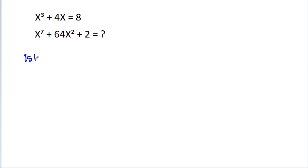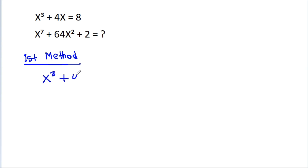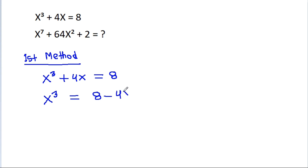So the first method. We have x cubed minus 4x is equal to 8, so x cubed will be equal to 8 minus 4x.